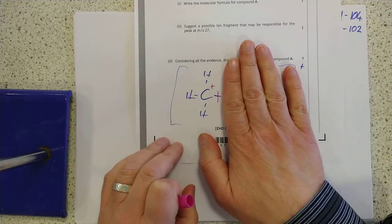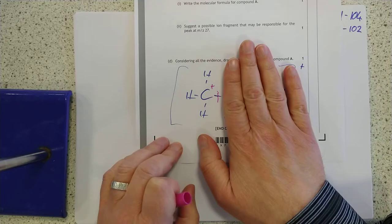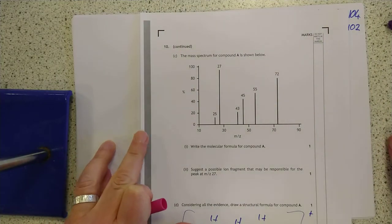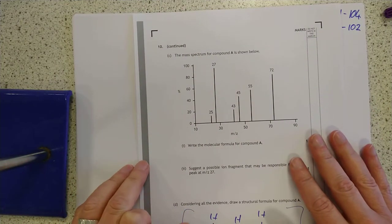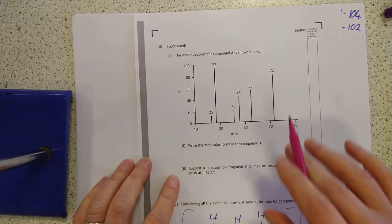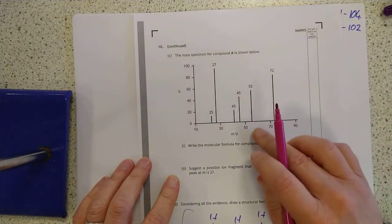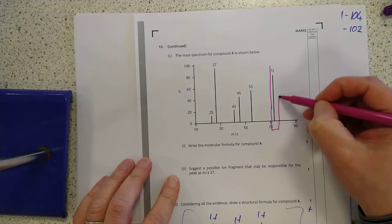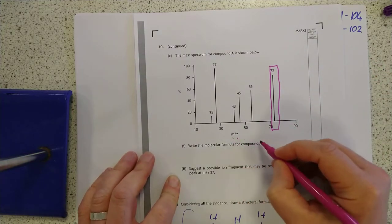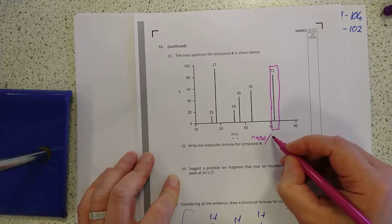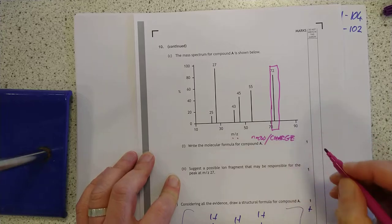And then what you do is you collect these fragments in a detector and you end up with a graph that looks something similar to this. So here we have a mass spectrum for a compound and the two things to get from these mass spectra are first of all seek out the right hand most line. If you have a look at the bottom here, it's M to Z, which is the mass over the charge, which is what we tend to label the bottom axis as.